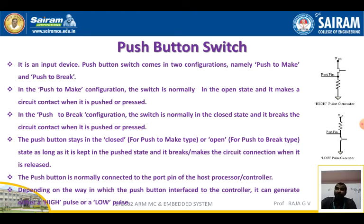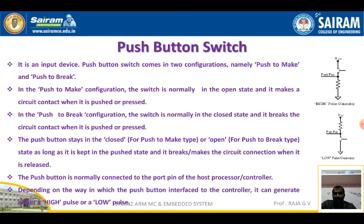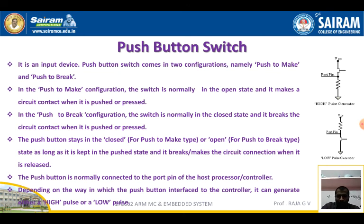A good example is the door closing mechanism in a bus. When a switch is pressed, the switch makes contact — that means the door will be closed. If you press the same push button again, it breaks the configuration — that means the door will be opened. A push button stays in the closed or open state as long as it is kept in the pushed state, and it breaks or makes the circuit connection when it is released. For push to make type, the released state is open; for push to break type, the released state is open. The push button is normally connected to the port pin of the host processor or controller, and depending on how the push button is interfaced to the controller, it can generate a high pulse or low pulse.